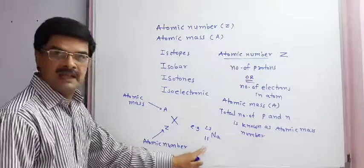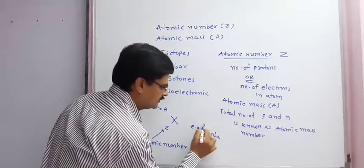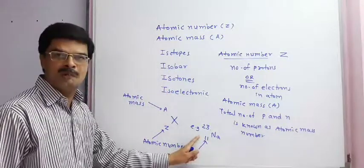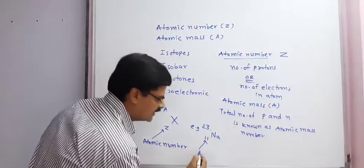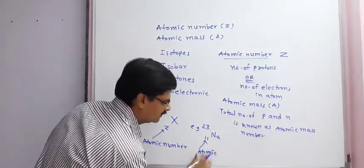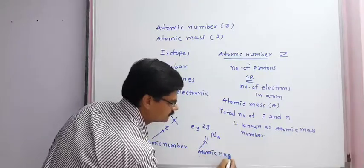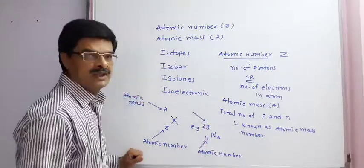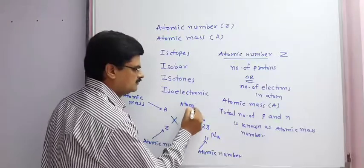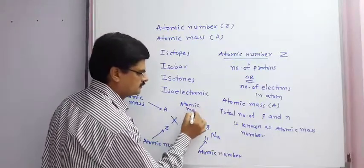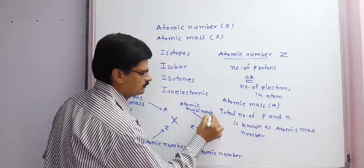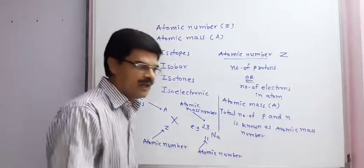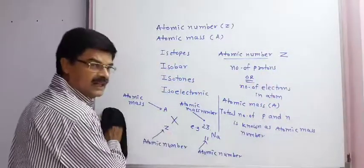Take the example: if we write sodium metal ¹¹Na²³, then 11 is said to be either the number of electrons or number of protons, which is the atomic number, and 23 is known as the atomic mass number.